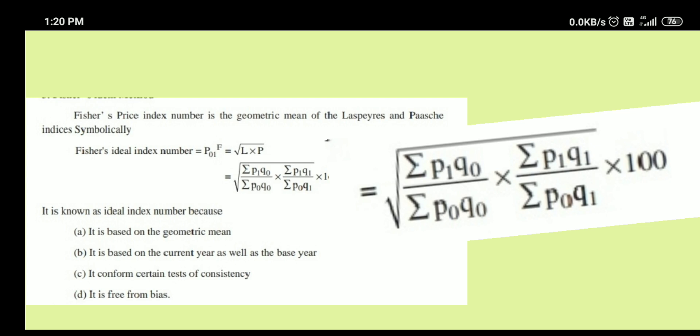Alternatively, you can work it out like square root of Laspeyres' price index number into Paasche's price index number. Because the first part is the formula given by Laspeyres and the second part is the formula given by Paasche. Therefore, you can calculate Fisher's index number with the help of the alternative formula, that is square root of L into P.